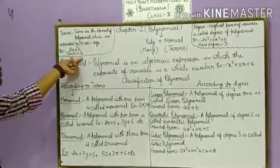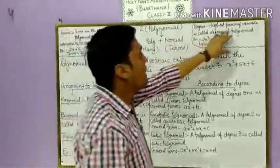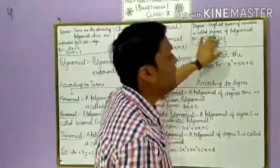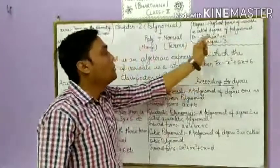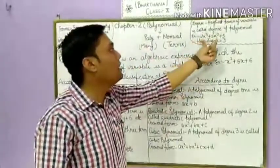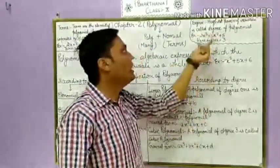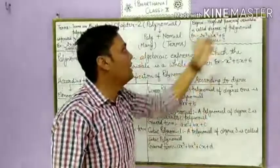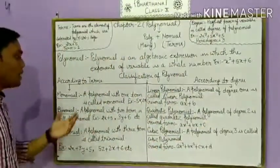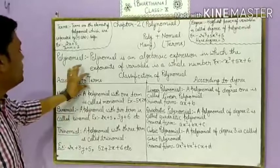The number of terms is determined by counting the elements separated by plus or minus. The degree is the highest power of the variable in the polynomial.